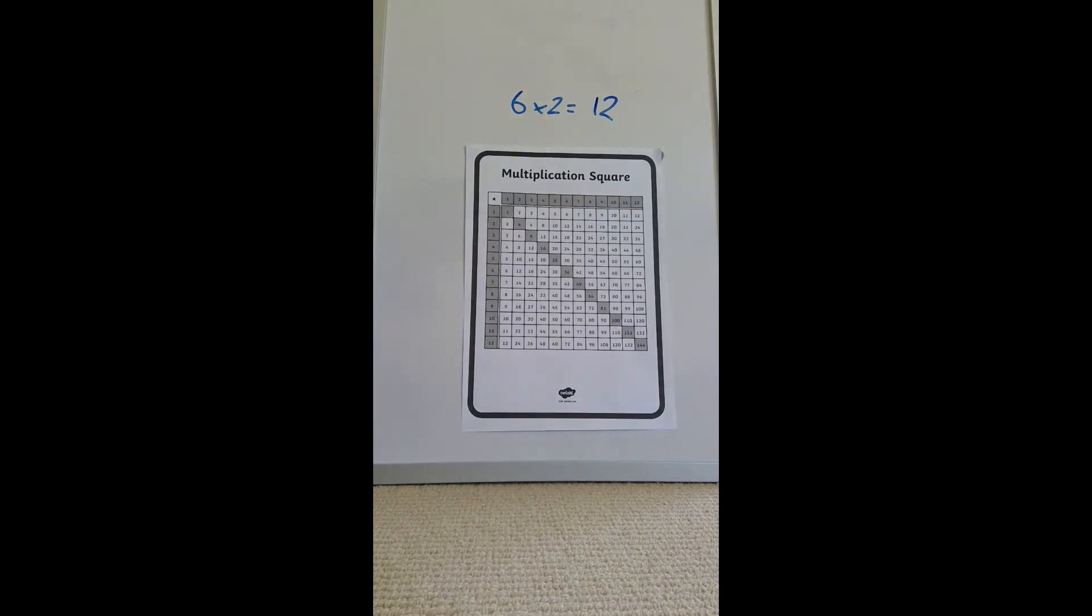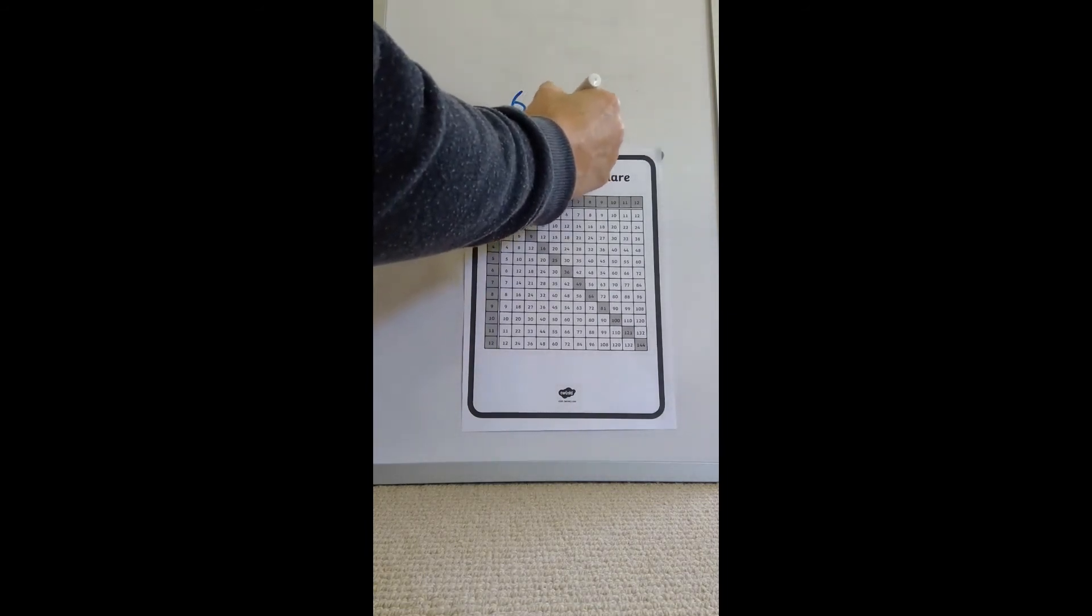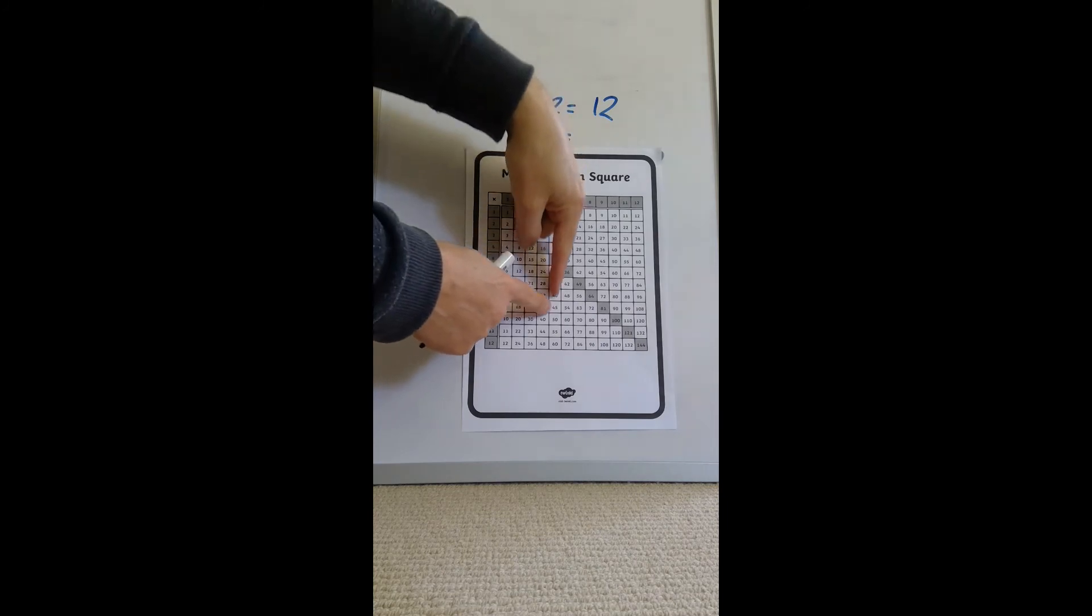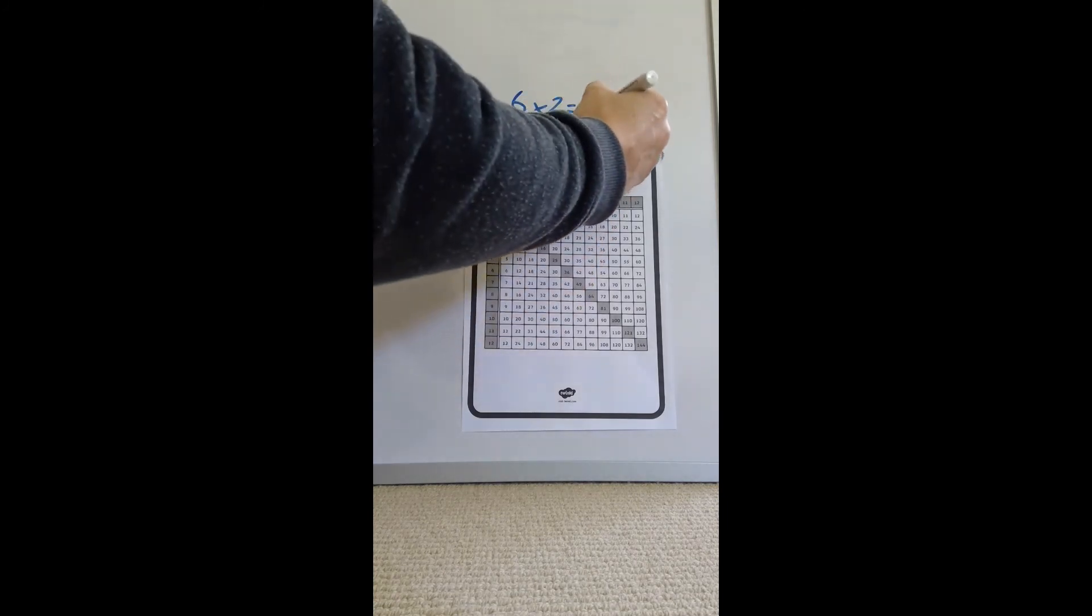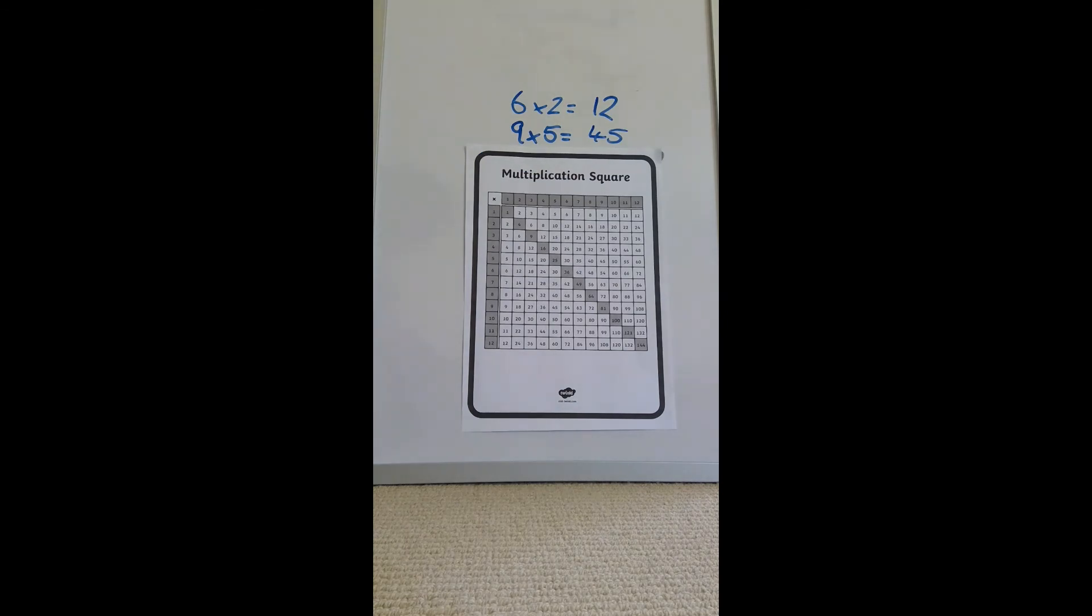If you had another problem such as 9 times 5, it's the same process. You find nine, you find five, and you come across and meet in the middle. In this case, 45. You'll be able to use this over the next few weeks to help you.